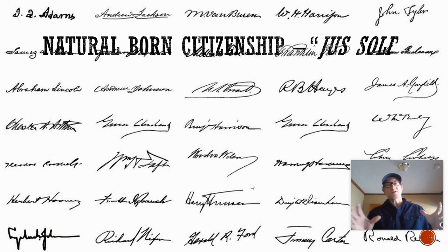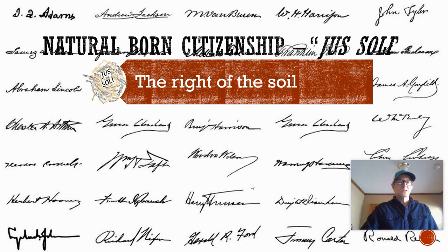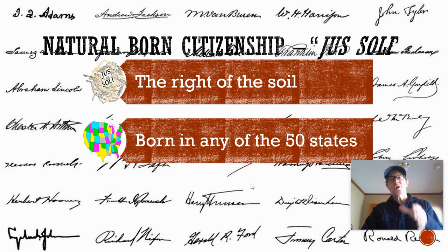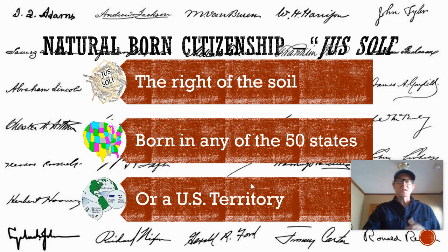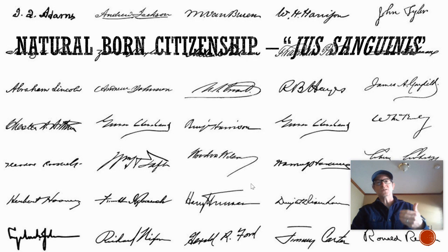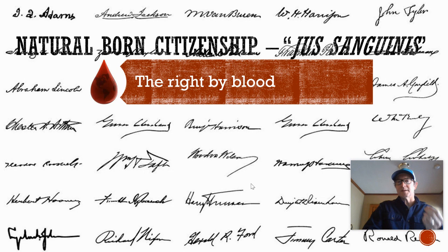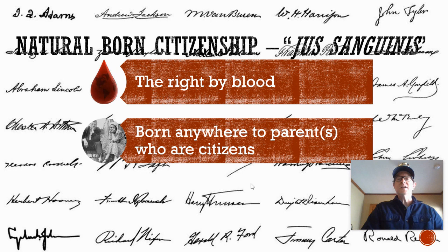There are two broad ways you can be considered a natural born citizen. One is jus soli — the right of the soil — meaning you were born in the United States or a U.S. territory. So if you were born in Puerto Rico, you'd still be considered a natural born citizen. The other category is jus sanguinis — by blood — meaning that if your parents were citizens, then you're going to be a citizen as well, regardless of where that child was born.